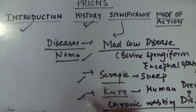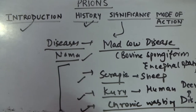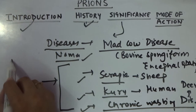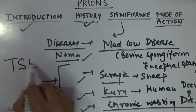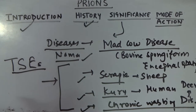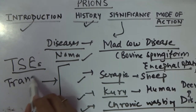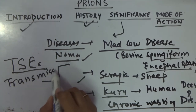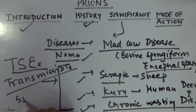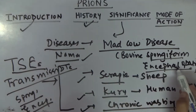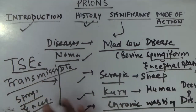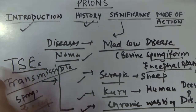All the diseases together caused by prions are referred to by the term transmissible spongiform encephalopathy (TSE). So collectively, all prion-caused diseases are called TSEs.